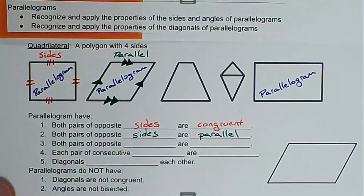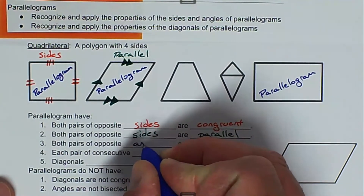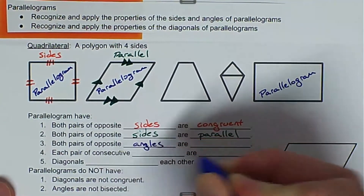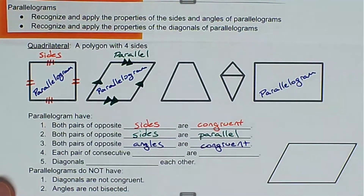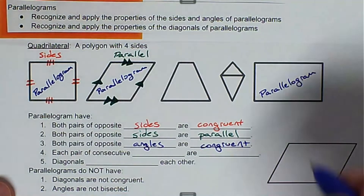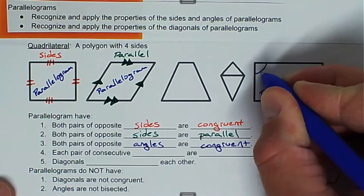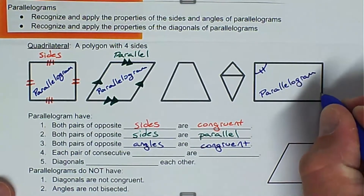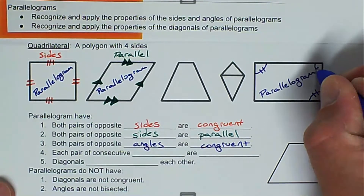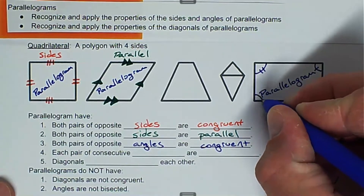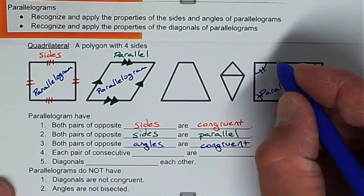Next, each pair of opposite angles are congruent. So what that means is if we mark this angle with two marks, we mark the opposite angle with two marks, and then we mark this angle with one mark, and the opposite angle with one mark. So this property is about angles being congruent.